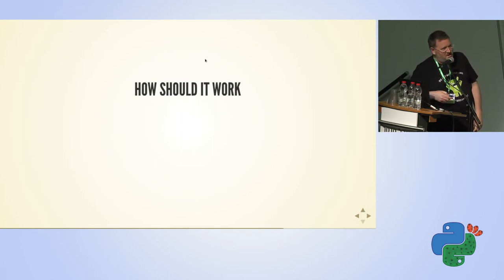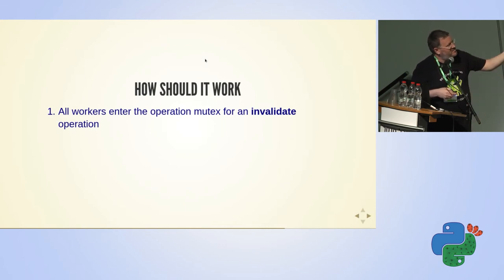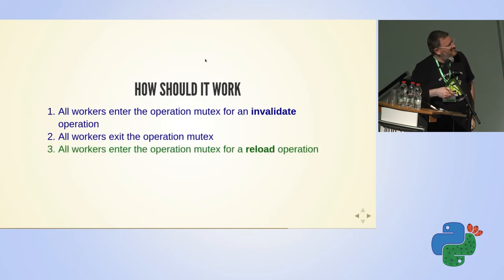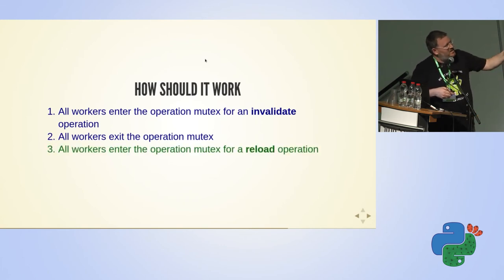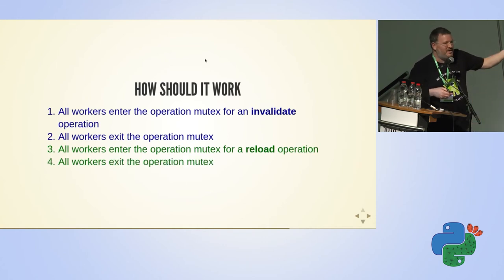How should it look if it worked? We expect that all the workers will enter the operation mutex for the first operation and finish, and then all the workers enter for the second operation and finish. And now we have concurrency.